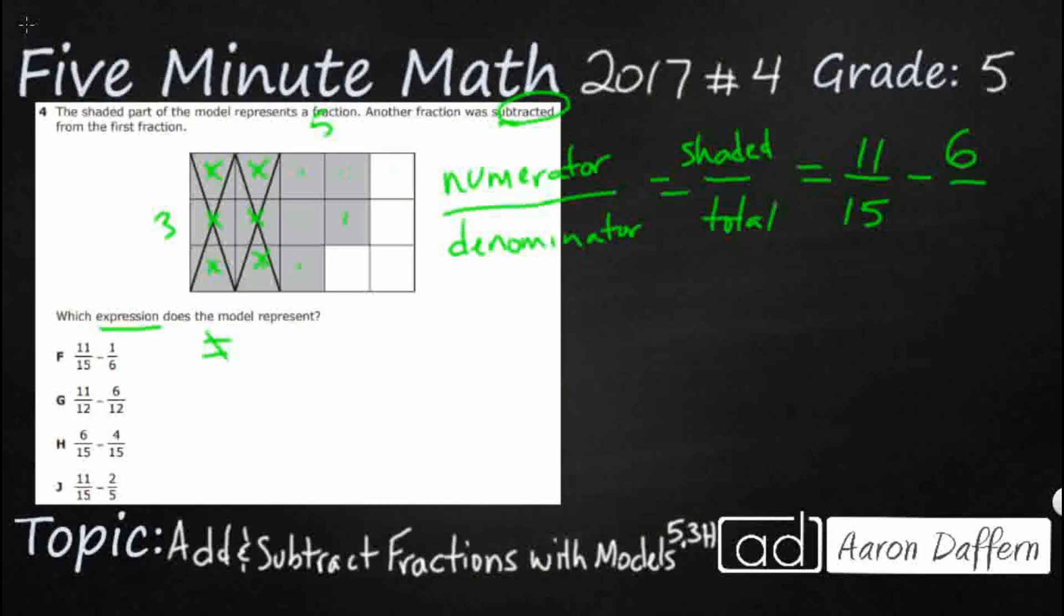We're still looking at our same denominator and if we wanted to we could take a look at an answer. If we wanted to make this an equation we could say eleven fifteenths minus six fifteenths is how many is left? One two three four five. Eleven minus six is five.